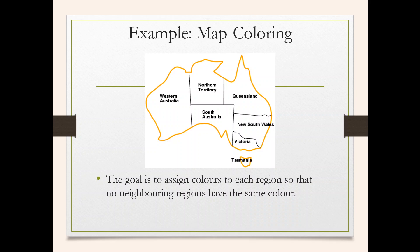Let's look at one example of CSP — the well-known map coloring problem. You have a map of Australia and you need to color it. The goal is to assign a color to each region — for example, Western Australia — so that no neighboring region has the same color. The neighboring regions of Western Australia are Northern Territory and South Australia.